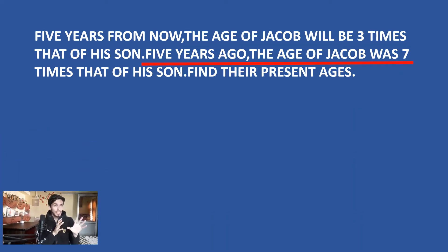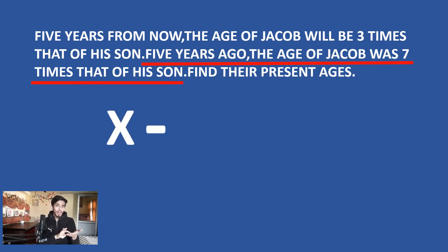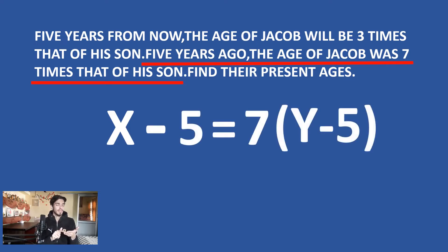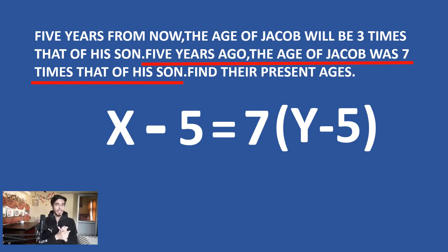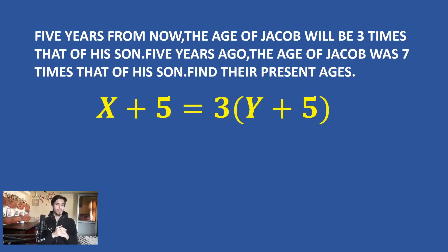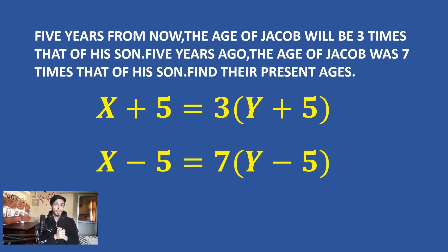Five years ago Jacob's age was seven times that of his son's age, so: x - 5 = 7(y - 5). Never fall for the trap of writing 7y — it is y minus five, because they are not saying the son's present age. Now we have two equations, and all the information that can be extracted from the question is captured in these two equations.